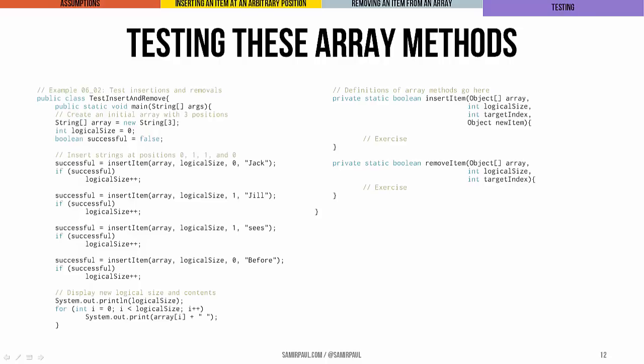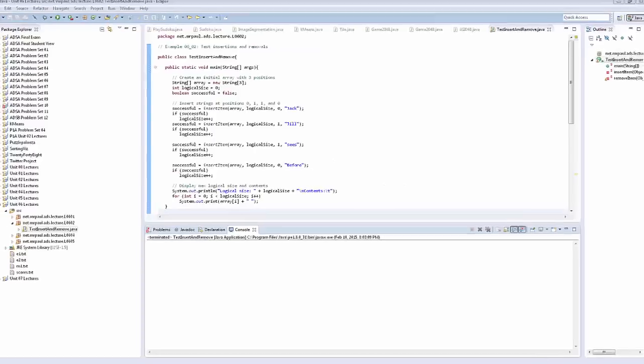A key thing to notice here is that though we have these utility methods that are going to do the insertions and removals for us, it's still up to us to track the logical size of the array. So that means if there are elements in the array that are null or empty or not meaningful data, then you want to have a variable that keeps track of how much of the array is occupied by meaningful data, by useful stuff. That's going to stop you from getting a bunch of null pointer exceptions and things like that.